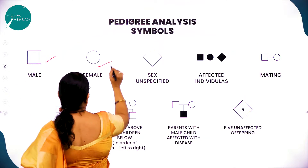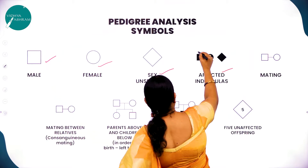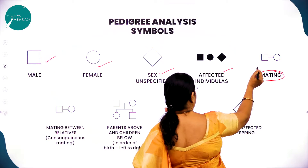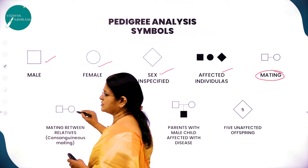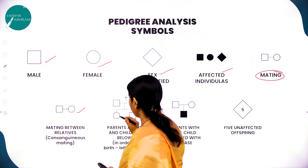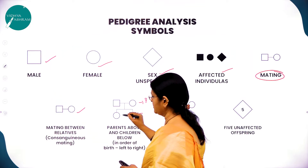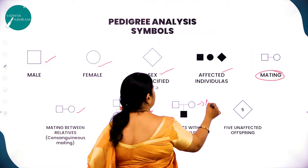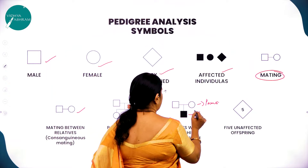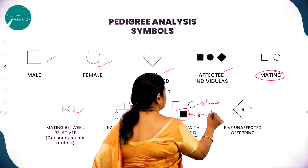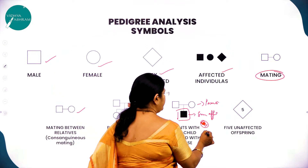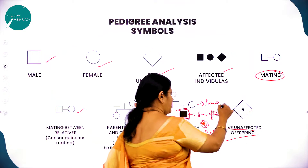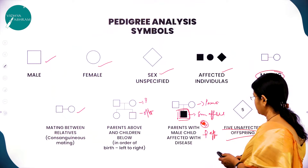To summarize the symbols: normal male is an unshaded square, normal female is an unshaded circle, sex unspecified is an unshaded triangle, affected male is a shaded square, affected female is a shaded circle. Parents are in the upper row and offspring in the lower row. Five unaffected offspring can be represented numerically inside the symbol.